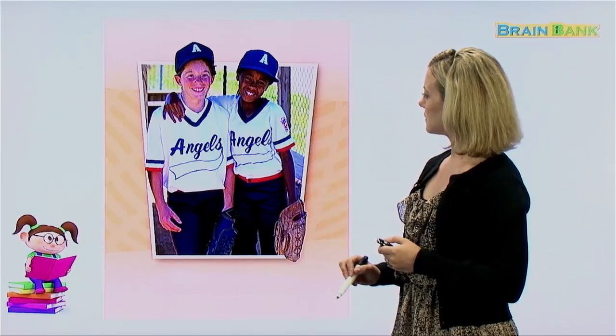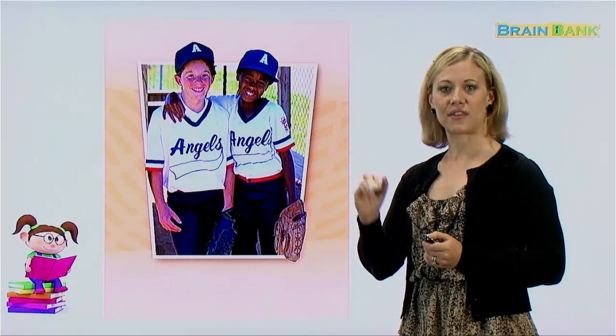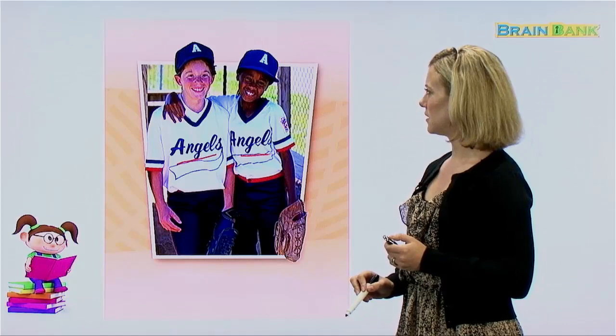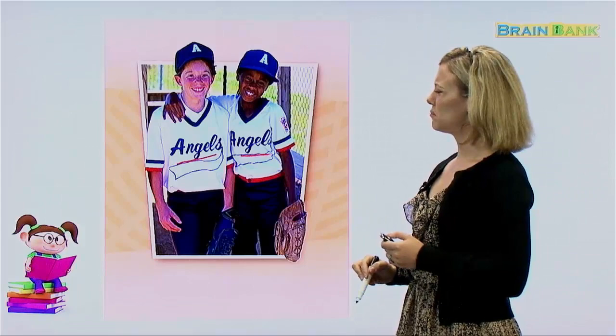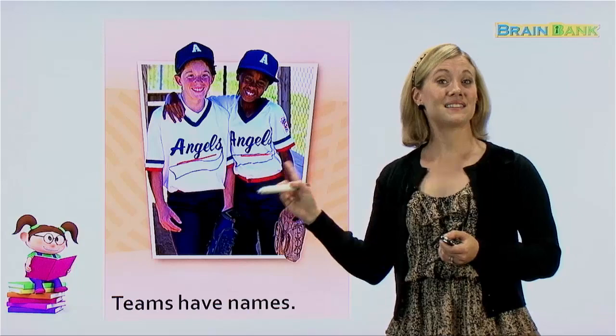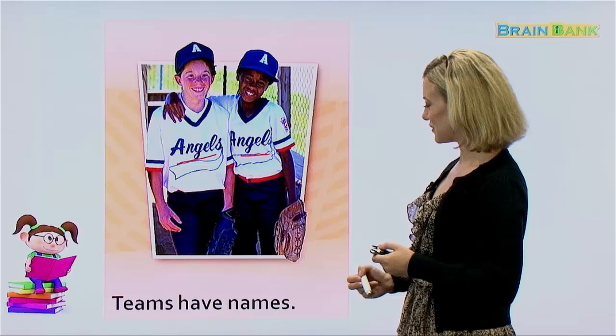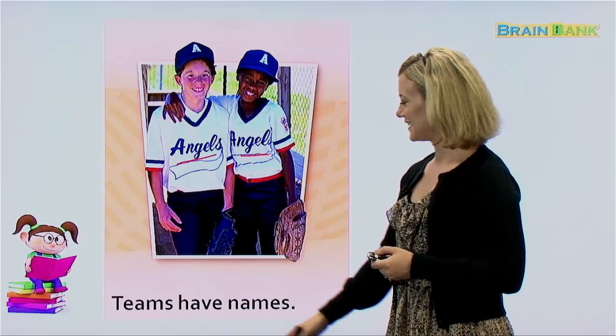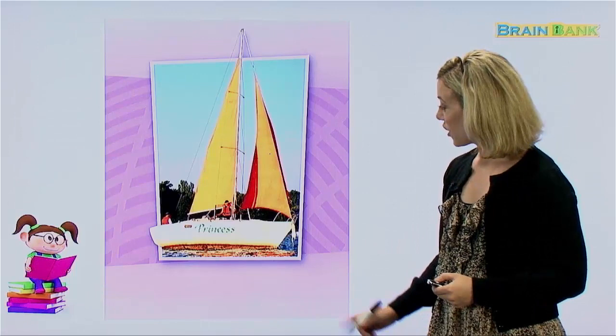What have we here? We have some children — it looks like they are playing baseball by the looks of the mitts on their hands. But on their shirts it says 'Angels.' Do you think Angels is both of their names? Probably not. Teams have names. So this team, their baseball team, is called the Angels — they are the Angels. Let's read it all together: teams have names. Teams have names. Very good.